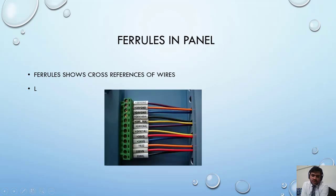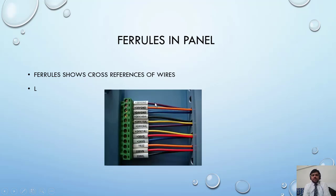Ferrules can show only one side of information — for example, only the cross or the other end. But if the ferrule contains information for both the local and remote side — in other words, both the source and destination addresses are mentioned — then it's called a cross ferrule. It's always good to have a cross ferrule, which is really useful for troubleshooting.